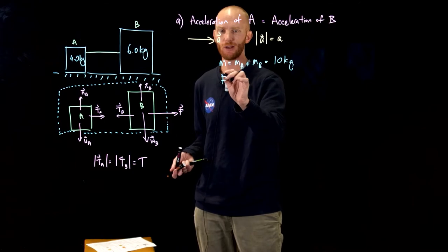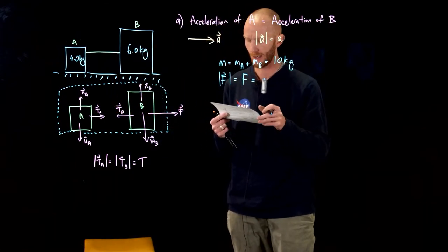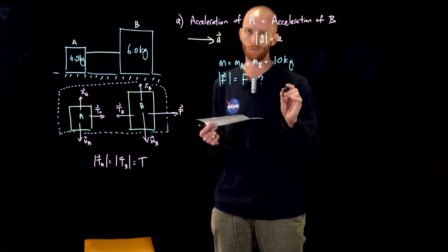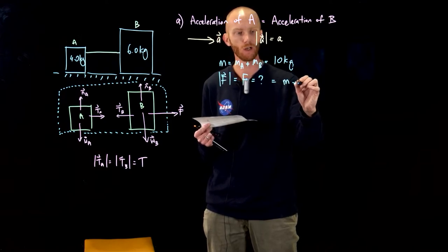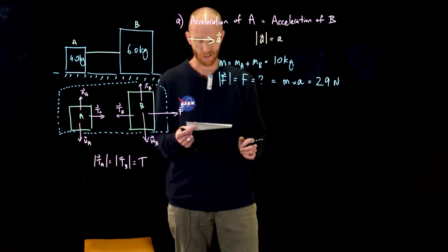The force they're pulling with has a magnitude which we're trying to find out. We can already figure it out. It's going to equal that mass times the common acceleration which is 29 newtons. Pretty easy.